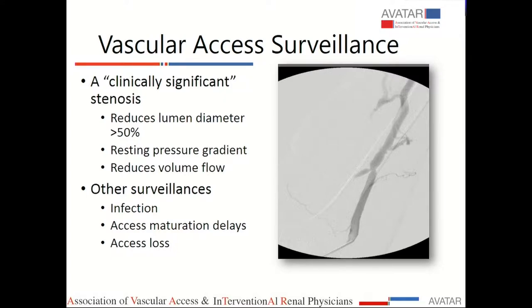A couple of decades ago, dialysis access — especially in the U.S., which was predominantly grafts that were clotting left and right — there was no interventional nephrology, no vascular access centers to declot them. They were hospitalized and spent multiple days in the hospital just to get a procedure done. That's when our mentors thought about surveillance methodologies, because they wanted to prevent an access from clotting. During that time, pretty much any procedure which was done showed a stenosis, so the whole concept started to revolve around stenosis as the single most important factor causing thrombosis.